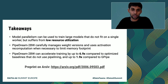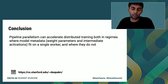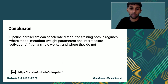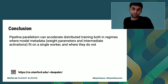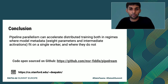A preprint of this work is available on arXiv. In conclusion, we've shown that pipeline parallelism can accelerate distributed training both in regimes where model metadata — weight parameters and intermediate activations — can fit on a single worker, and also in settings where they do not. Pipedream's code is open source on GitHub. Thank you for listening, and I'm happy to take questions.